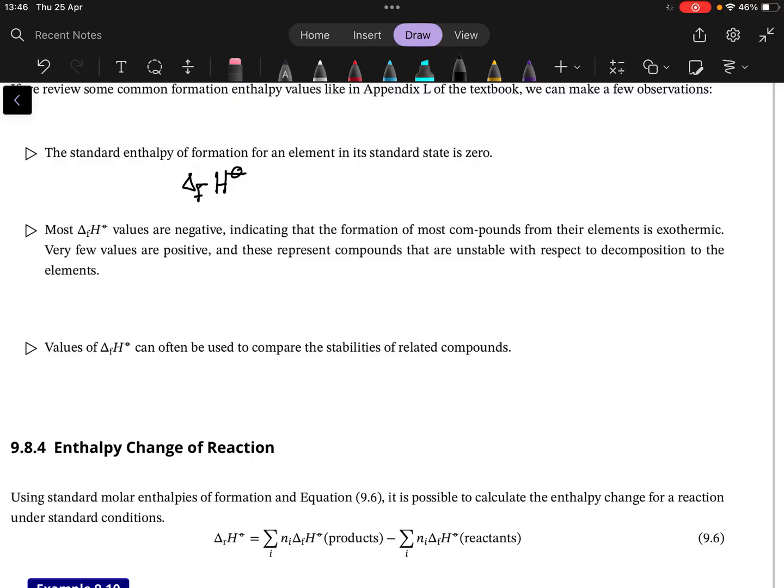Some things that you can commonly know: the formation enthalpy for something in its standard state is zero. For example, the formation enthalpy of hydrogen gas—so hydrogen is a gas at room temperature under standard conditions, so at one bar pressure, 25 degrees Celsius, hydrogen will be a gas—and that then means that its enthalpy of formation is zero.